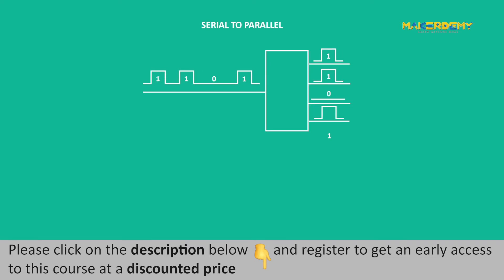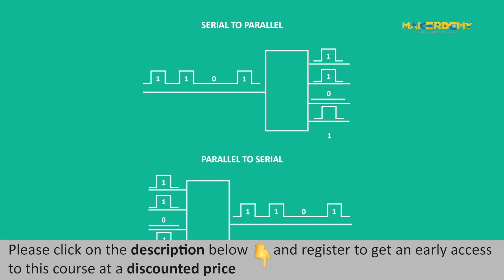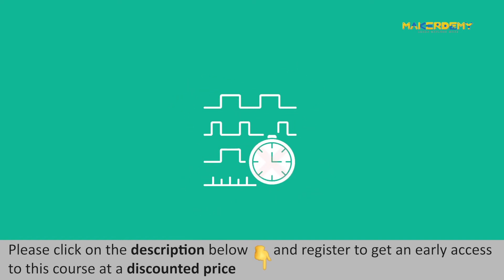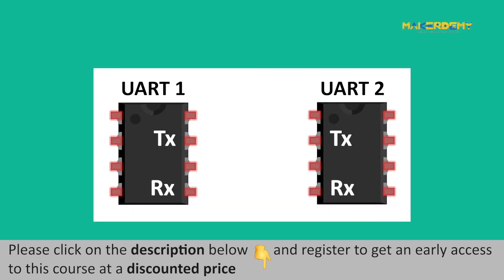Serial-to-parallel conversion is applied on the data coming from a peripheral device, and parallel-to-serial conversion is applied on the data transmitted to peripheral devices. UART is asynchronous, meaning no clock signal is required to synchronize the transmitted and received data. UART is a two-wire communication.